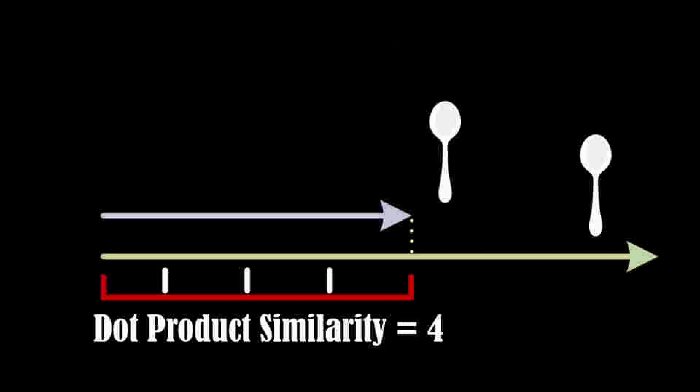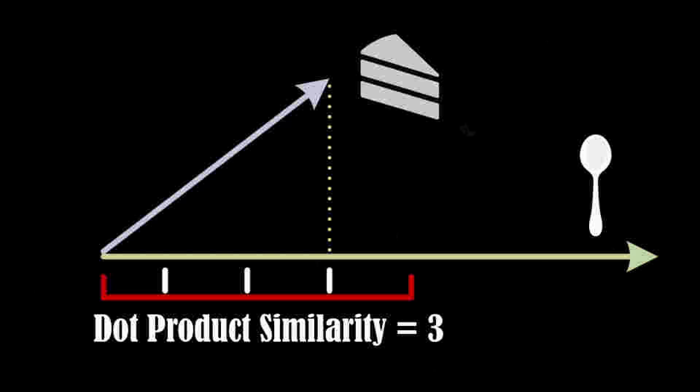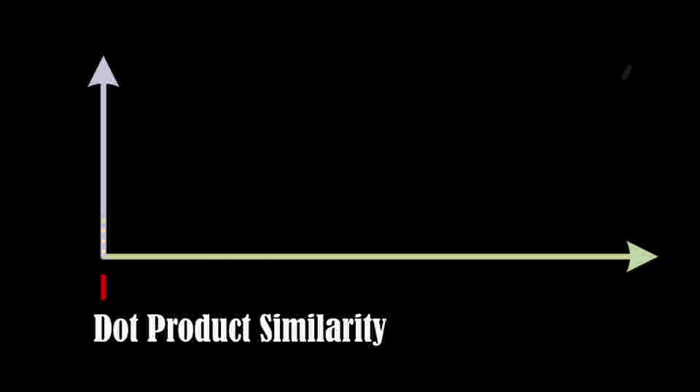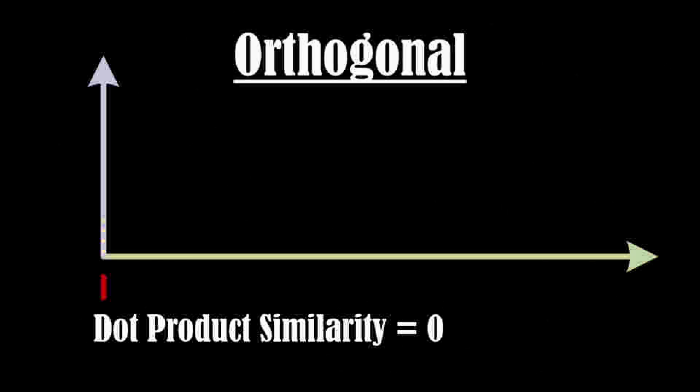If two features point in the same direction and are parallel, they are considered the same feature. This means they have a very high dot product. If two features face similar directions, their dot product will be less, but still high. If two feature vectors are 90 degrees apart, they are considered to have nothing to do with each other. They have zero dot product. We call these directions orthogonal. Ideally, we want unrelated features to be as orthogonal as possible.